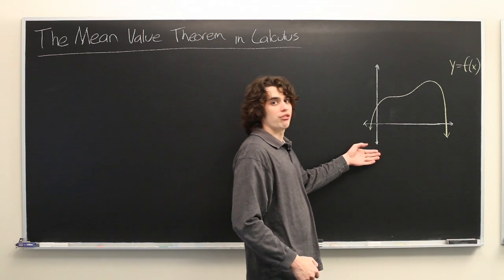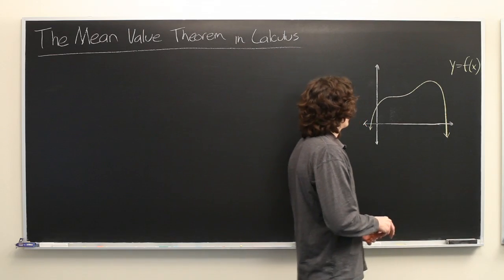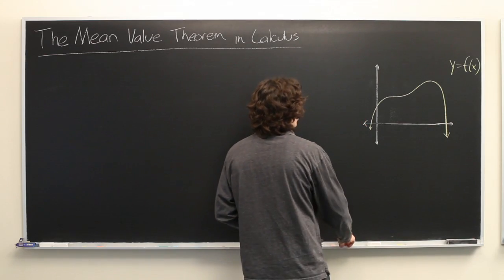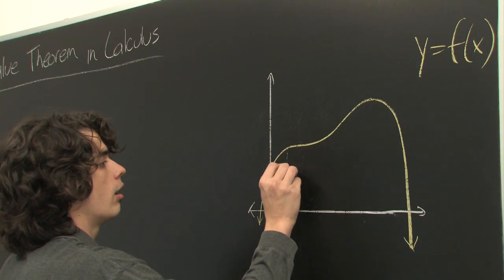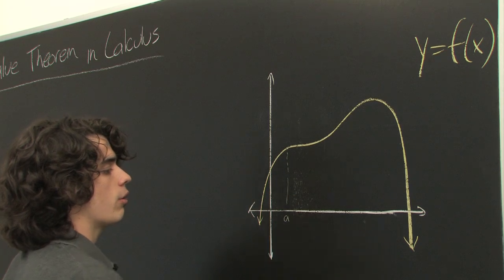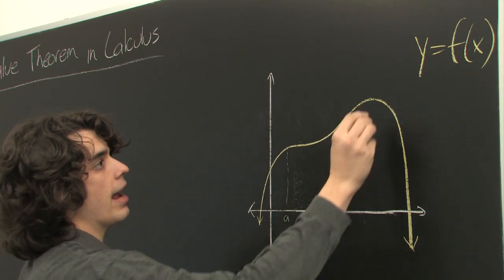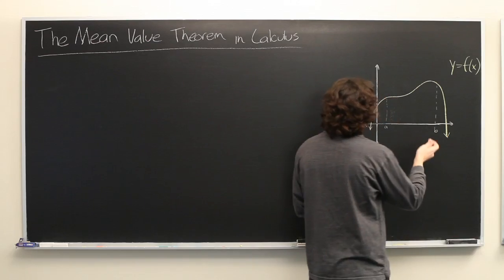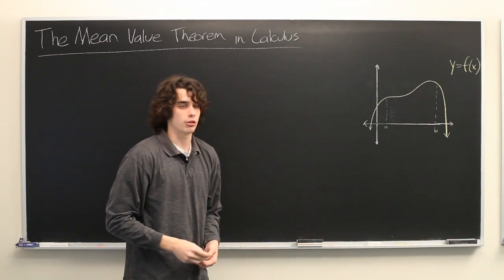So here we have a graph of some function y equals f of x. And we are interested in part of the graph on the interval from a to b, where a and b can be any points on the domain.